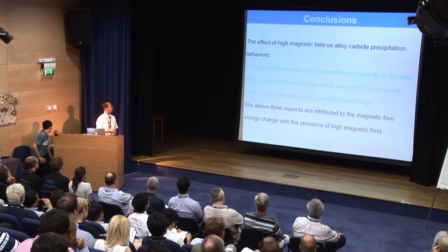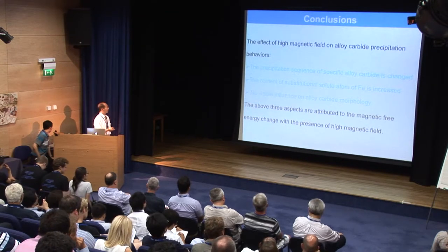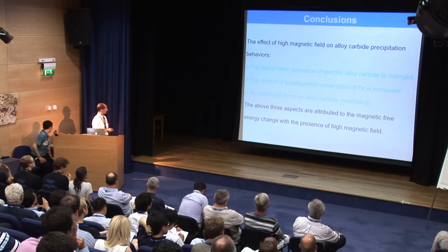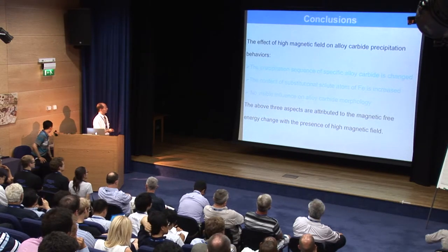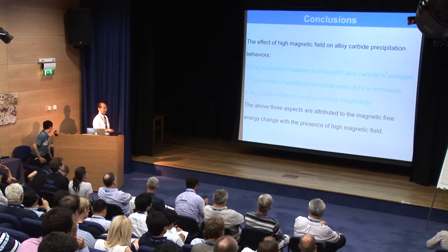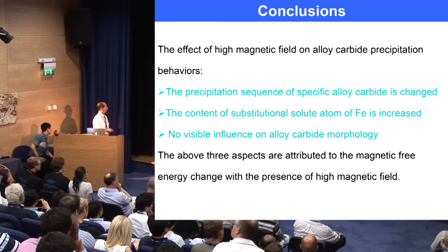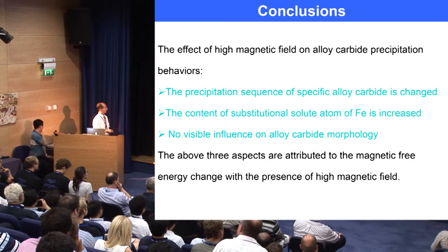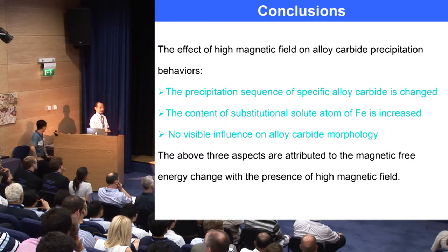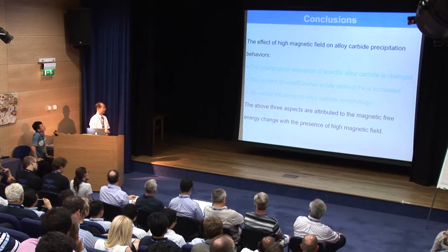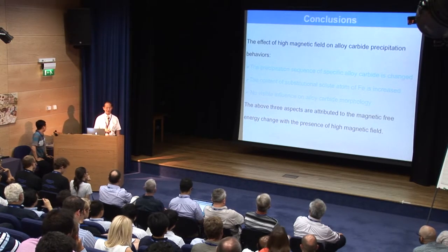In conclusions, the effect of high magnetic field on austenoid carbide precipitation behavior is as follows. The precipitation sequence of specific austenoid carbides is changed by the high magnetic field. The content of substitution iron atoms is increased in the presence of high magnetic field. We do not see visible influence on the austenoid carbide morphology. These three aspects are attributed to the magnetic free energy change in the presence of high magnetic field. Thank you for your kind attention.